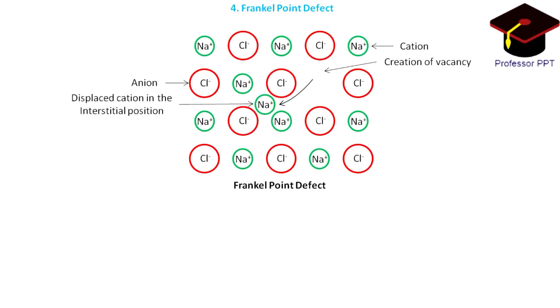Frenkel defect: If an atom or a smaller ion, usually a cation, is displaced from its regular site to an interstitial site, the defect is called Frenkel defect. It is observed in silver halides and calcium difluoride.